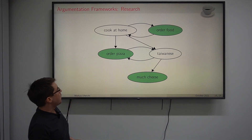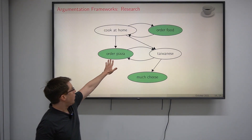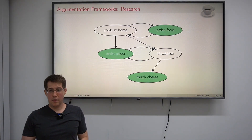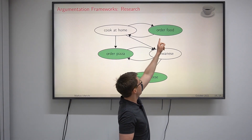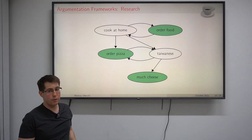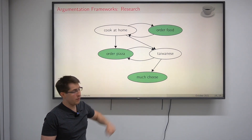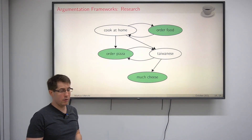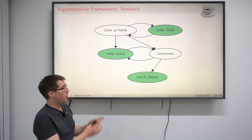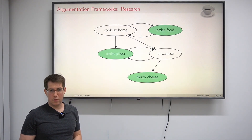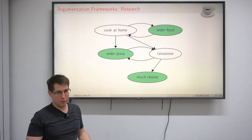In our running example, it is quite easy to understand why ordering pizza has some reasonable arguments. We can say: we order food; if we order food, we order either pizza or Taiwanese; and if we order pizza, we can have as much cheese as we want. It is fairly easy to understand and intuitive why this is a solution and why we have satisfactory arguments for ordering pizza.